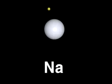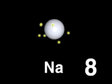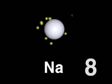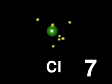A sodium atom has one valence electron, with a stable energy level below containing eight electrons. A chlorine atom has seven valence electrons.